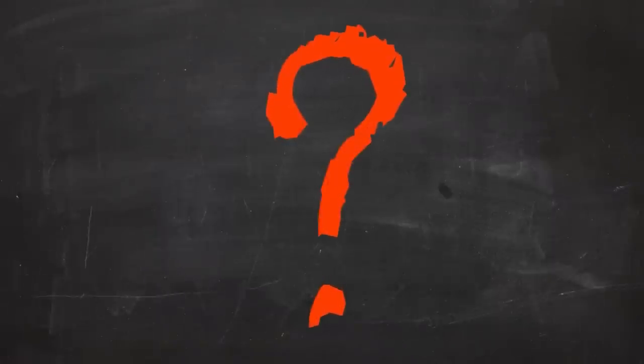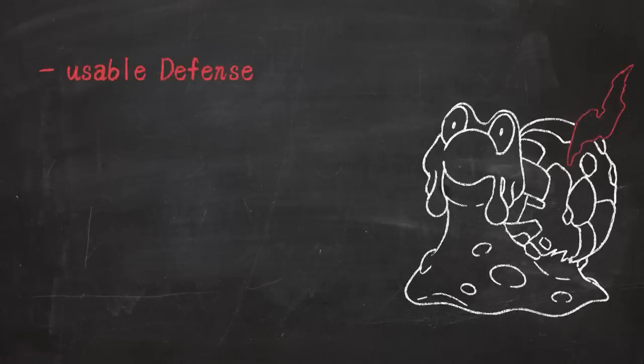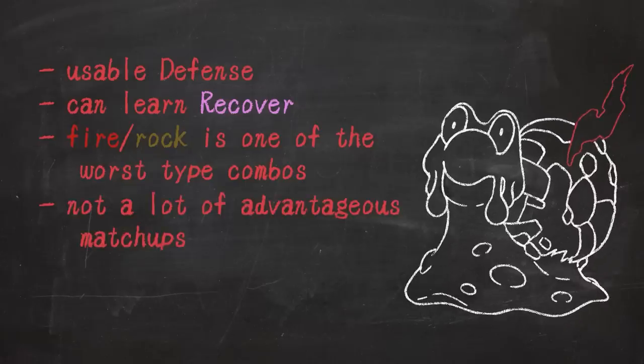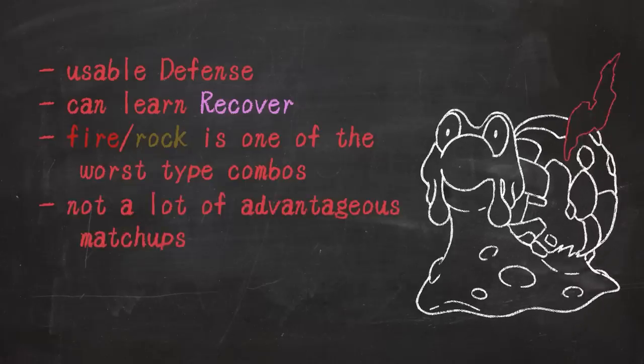So what was Mag good for? How do you build a team that highlights his strengths? What strengths? He had slightly above average defensive stats and access to reliable recovery, but his defensive typing was so abhorrent that it meant that it was nearly impossible to find an opponent that didn't have unresisted coverage moves. He walls no one, even in PU, so he needs to go on the offense.